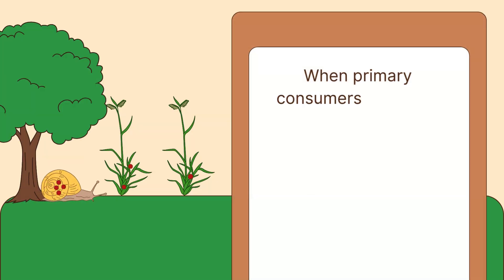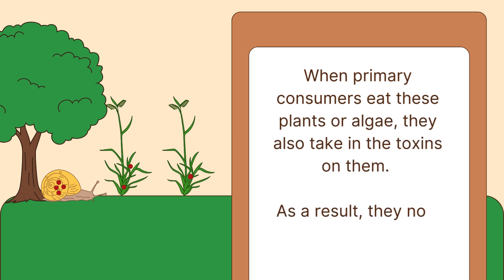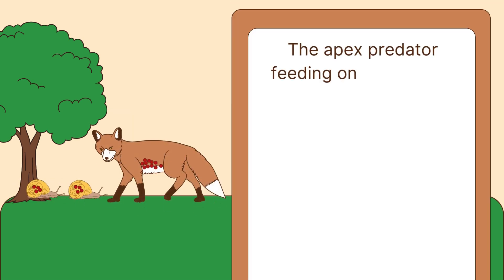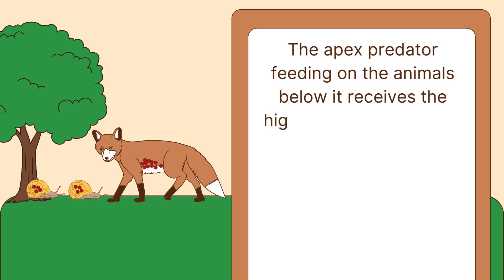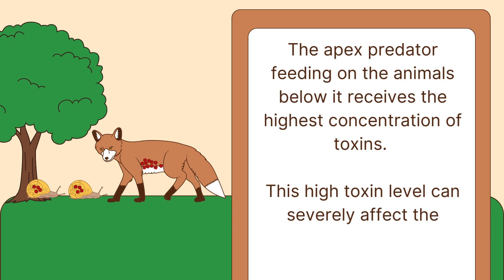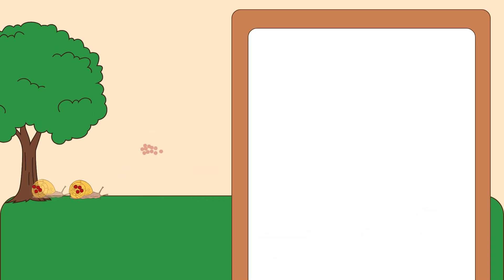When primary consumers eat these plants or algae, they also take in the toxins on them. As a result, they now have high levels of toxins. The apex predator feeding on the animals below it receives the highest concentration of toxins. This high toxin level can severely affect the organism and, eventually, the entire ecosystem.